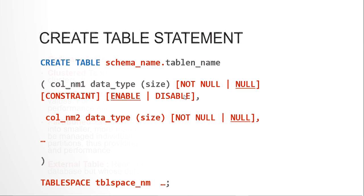The basic CREATE TABLE syntax starts with the CREATE TABLE keyword, followed by an optional schema name dot table name. Then opening braces contain the column definitions: column name, data type, and size. For example, NUMBER(3) can store up to 999, and VARCHAR2(5) stores up to 5 characters. Size is optional for NUMBER but required for VARCHAR2 and CHAR.